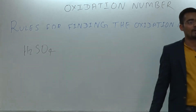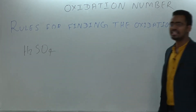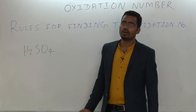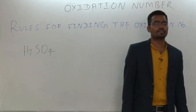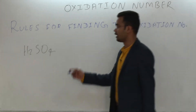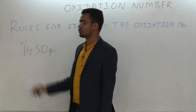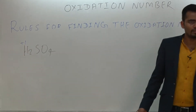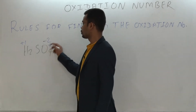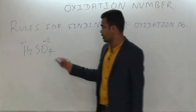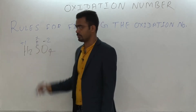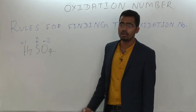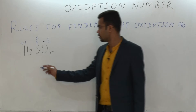We have to find the oxidation number of each element. For H₂SO₄, all elements here are non-metals, therefore hydrogen has +1. We know that oxygen has minus 2 generally. We do not know the sulphur, so assume it x. The sum of net oxidation numbers must be equal to 0 because it is a neutral compound.